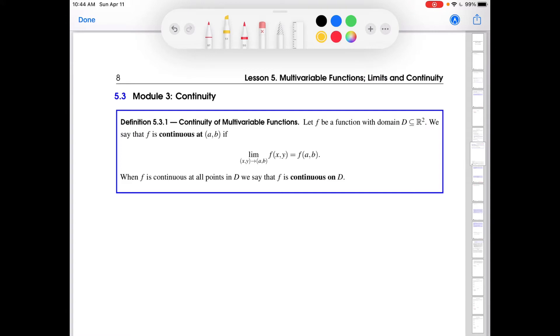Let's go through this definition. All of this can be generalized to functions of three variables. Suppose f is a function with domain d. We say that f is continuous at the point (a,b) if when you evaluate the limit and when you calculate the value of the function at that point, they are the same. So that's what continuity means, same thing that continuity meant in the single variable context. When f is continuous at all points on its domain or some subset of its domain, we say that f is continuous on d.